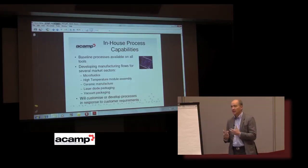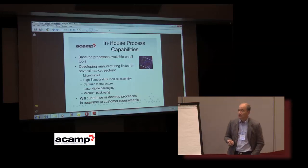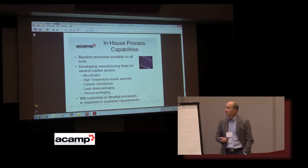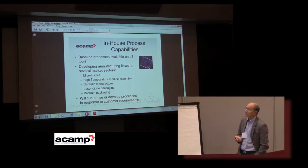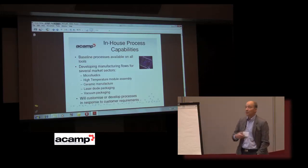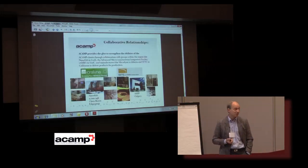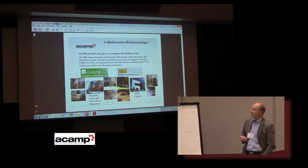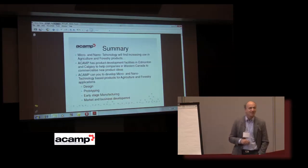Not only do we have the equipment and the tools, we also do process development to help our customers. We've developed several manufacturing process flows, including the microfluidics flow, a high temperature module assembly flow, ceramic manufacturing, laser diode packaging, and vacuum packaging flows. The key thing is we can also customise these flows or develop new ones for our customers based on our toolset. We have relationships with a number of key suppliers — we don't make the silicon chips ourselves, we rely on people like NanoFab or MicroLine to supply us with the chips.